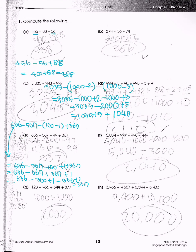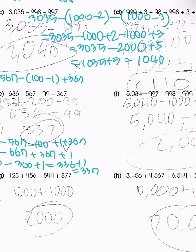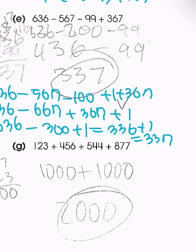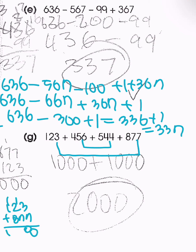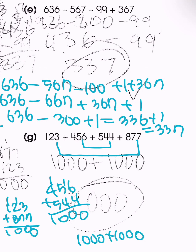Problem F is a similar type — change 997, 998, and 999 into something related to 1,000, and solve on your own. For problem G, we have 123 plus 456 plus 544 plus 877. Numbers ending in 3 and 7, and 6 and 4 are associated: 123 plus 877 gives 1,000, and 456 plus 544 gives 1,000. So we do 1,000 plus 1,000 = 2,000.